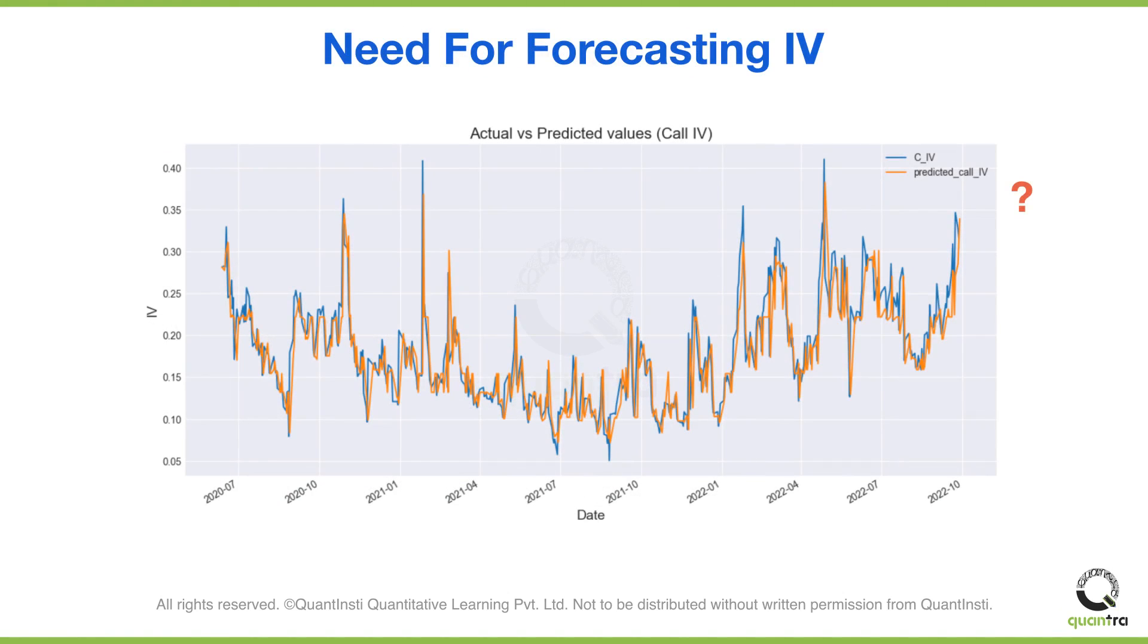The IV is a measure of the expected volatility of a financial instrument's price, and it is derived from the prices of options on that instrument. Forecasting IV can help traders make more informed decisions about buying and selling options. It can also help risk managers to better assess and manage the potential risks associated with their portfolio.